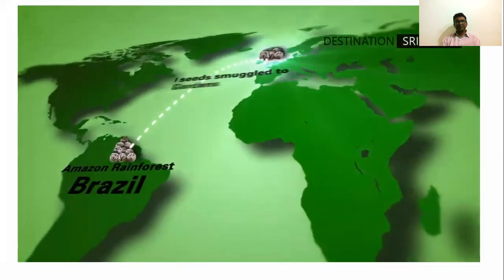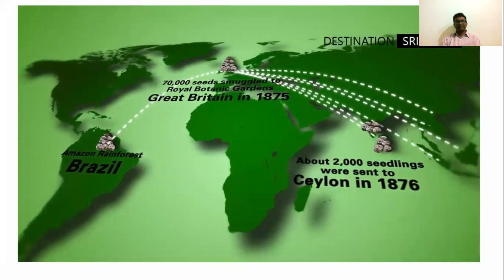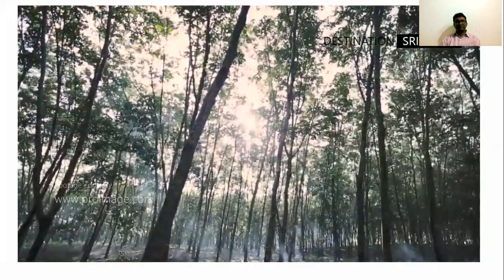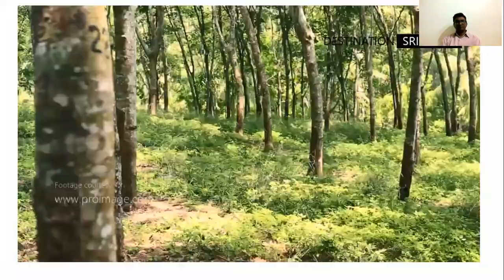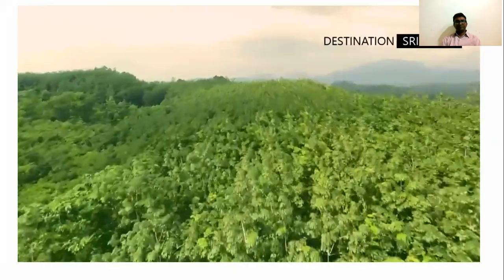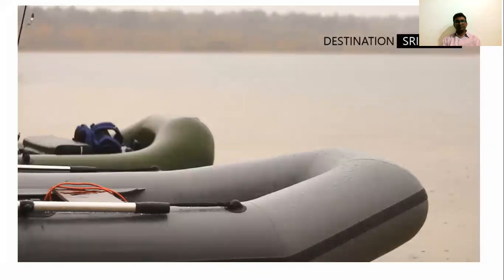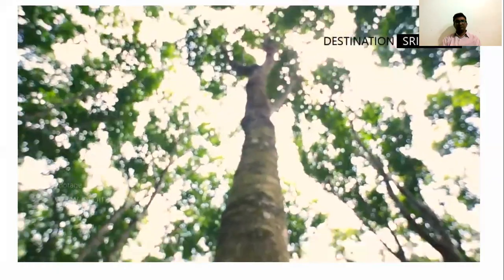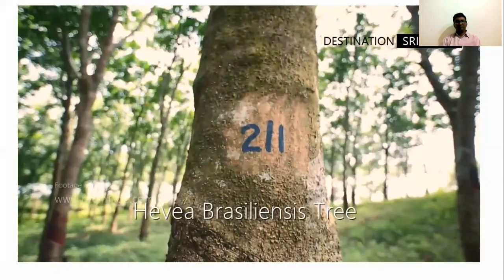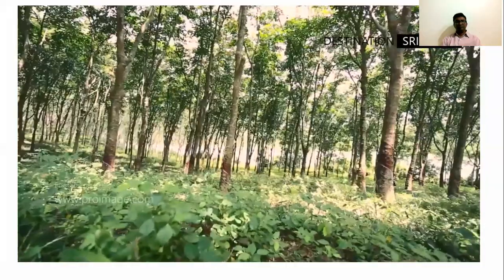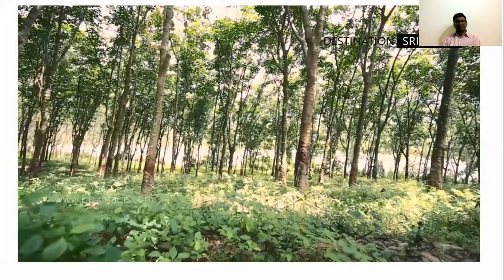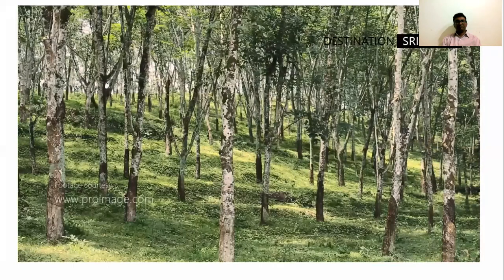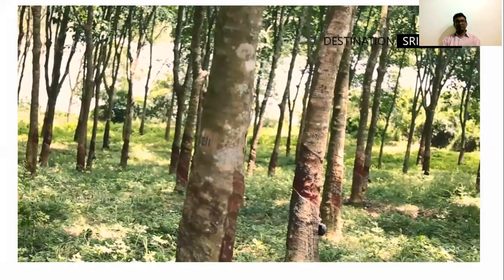Seeds from the rubber tree were subsequently smuggled to Britain and then exported to British colonies in Asia. Since the late 20th century, the majority of natural rubber has been produced in Asia, where there are vast rubber plantations. Natural rubber comes from the Hevea brasiliensis tree, which grows in tropical regions. These trees typically reach 20 to 30 meters in height and are able to produce commercial quantities of latex after about five years of age, depending on climate and location. The economical lifespan of a rubber tree is between 10 to 20 years.